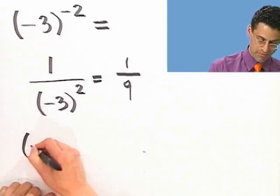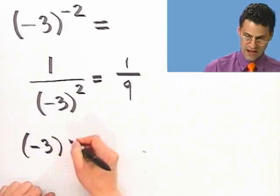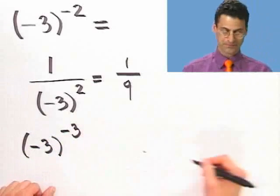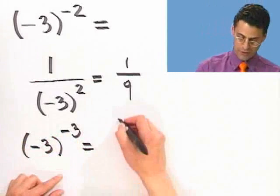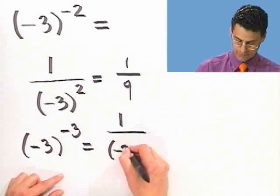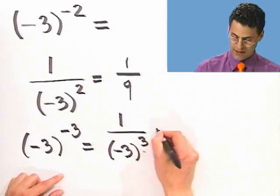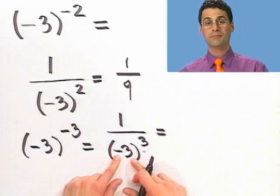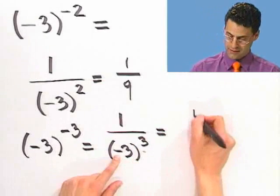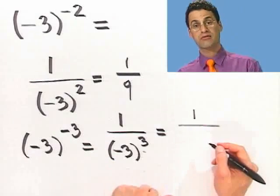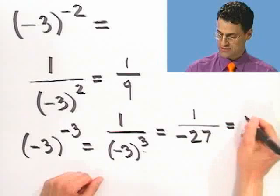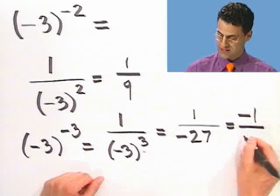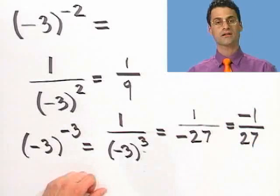Let's try another one: negative 3 raised to the minus 3 power. The negative exponent means I flip the whole thing, and now I have to multiply negative 3 by itself three times. That's negative 3 times negative 3 which is 9, times negative 3, which is negative 27. So the answer is negative 1 over 27.